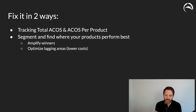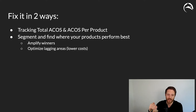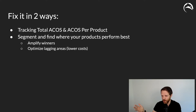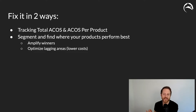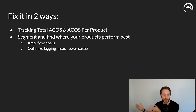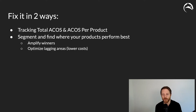Even if you have a 10% total ACOS on the account level, individually on a per-product level you might have products at 25–30% total ACOS and others at 5% or 2% total ACOS. You're leaving missed opportunity by not amplifying what's doing well, and wasting money by letting above-average total ACOS products run rampant.